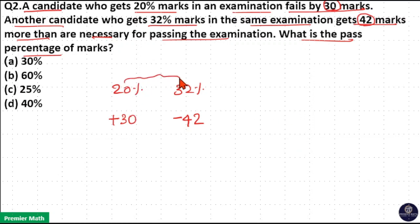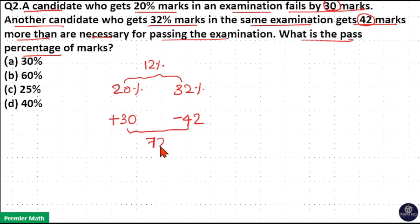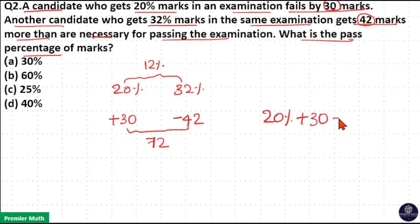The difference between 20 percentage and 32 percentage is 12 percentage, and here one is positive and one is negative. So the difference between 30 and minus 42 is 72. If you have doubt in this, you can write: 20 percentage plus 30 is the pass mark, which is equal to 32 percentage minus 42.